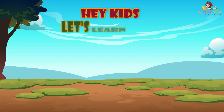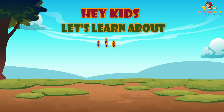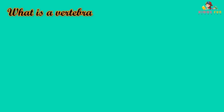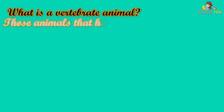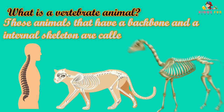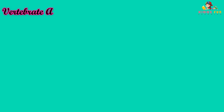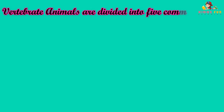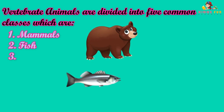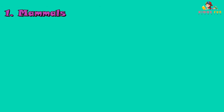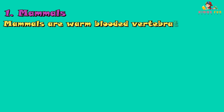Hey kids, let's learn about vertebrate animals. What is a vertebrate animal? Those animals that have a backbone and an internal skeleton are called vertebrate animals. Vertebrate animals are divided into five common classes, which are mammals, fish, birds, amphibians, and reptiles.